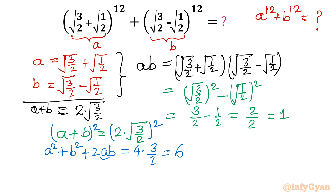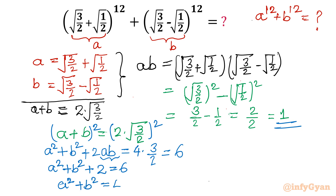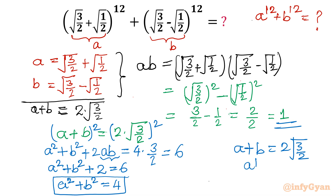Now AB is known — it is 1. Substituting: A² + B² + 2 = 6, so A² + B² = 4. So far we have three equations: A + B = 2√(3/2), AB = 1, and A² + B² = 4.